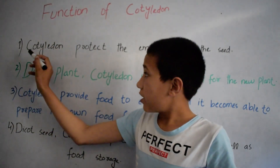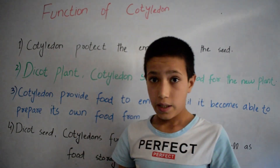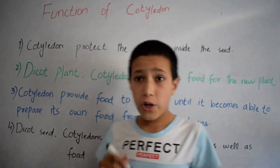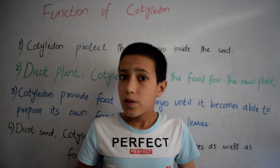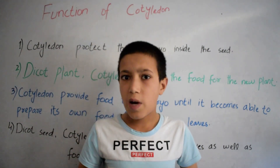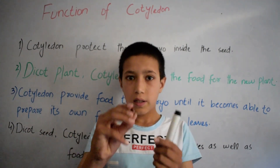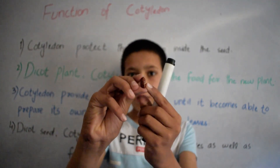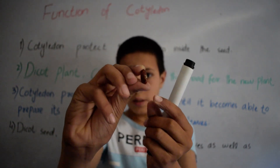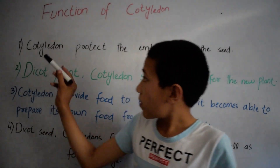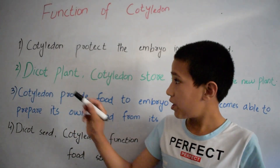The first function of cotyledon is that it protects the embryo inside the seed. Do you know, students, what is an embryo? It is a part of the seed where the life of the small plant starts. This is cotyledon, and it protects the embryo inside the seed.